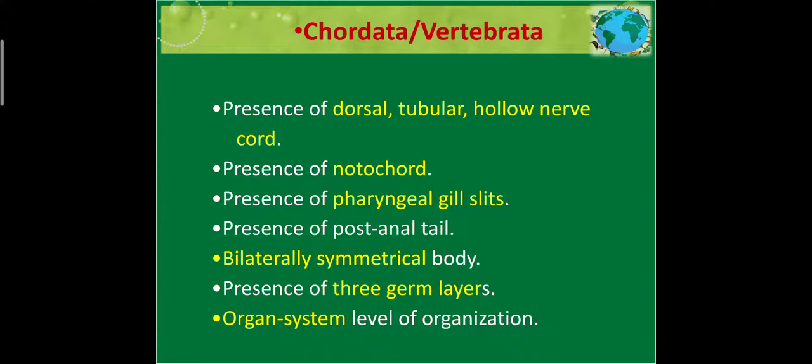Then there is the presence of a post-anal tail. Bilateral symmetrical body — these vertebrates have bilateral symmetry, front part and back part. They have three germ layers: endoderm, mesoderm and ectoderm.